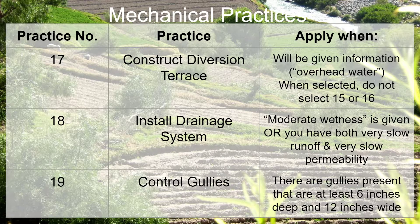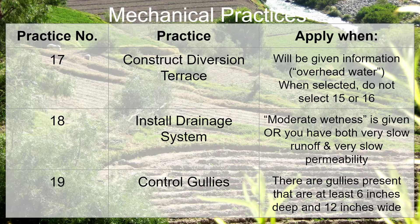Practice number 19: Control gullies. This practice is applied when there are gullies present that are at least six inches deep and 12 inches wide. If your gullies are smaller than this, do not apply the practice.